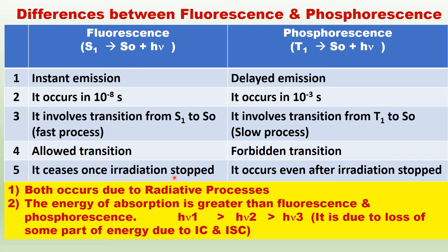Another important factor is that once irradiation is stopped, fluorescence disappears. Fluorescence will not appear once irradiation is stopped. For example, in cars and two-wheelers, you have fluorescent stickers. Once light falls on them, you will be able to see the car going, so you will be very careful.